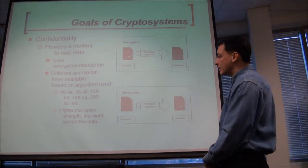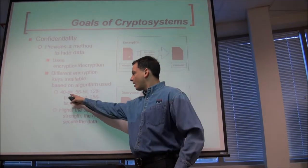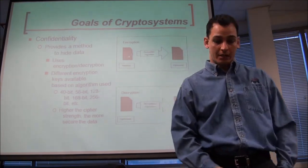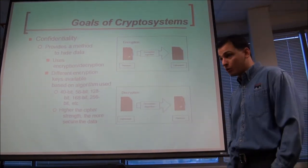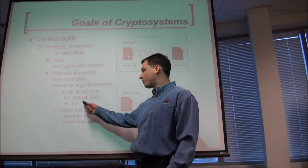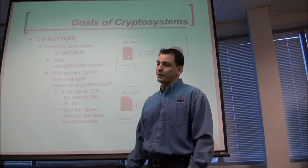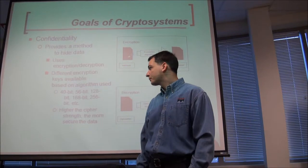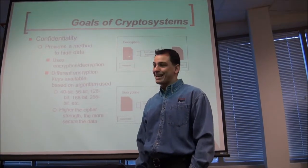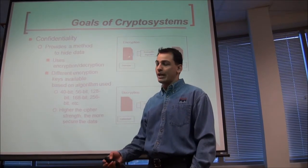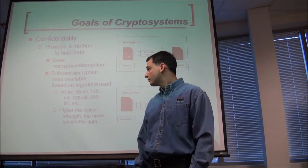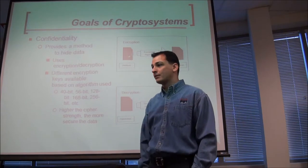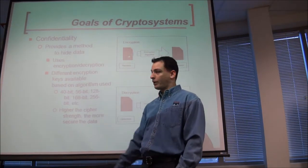There are different sizes of encrypting algorithms — I call these giveaways, because they tell you exactly which algorithm you're talking about. If you see 168, we have to be talking about Triple DES. If you see 128, it's either AES or IDEA. 56 bits is historically DES, and even weaker is 40-bit.